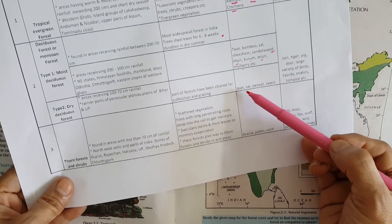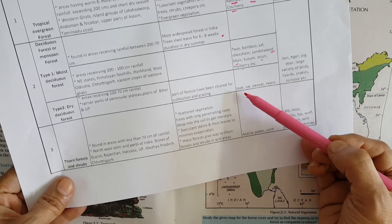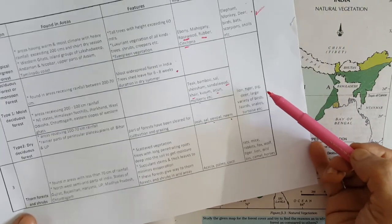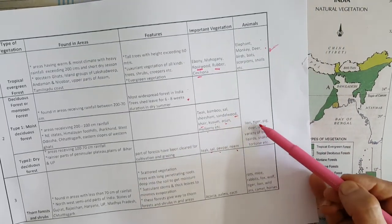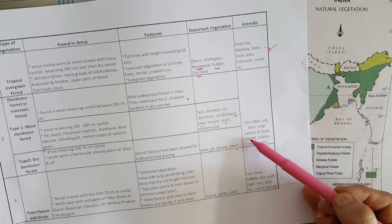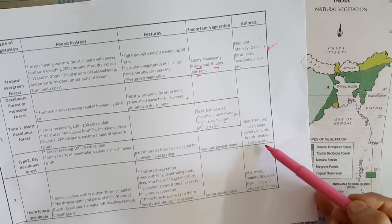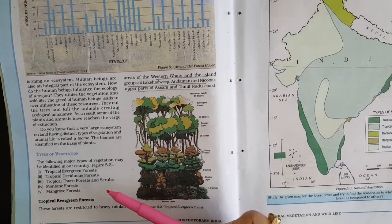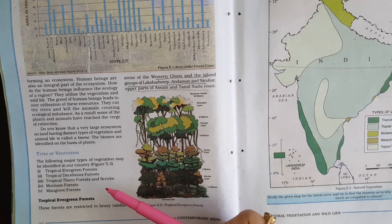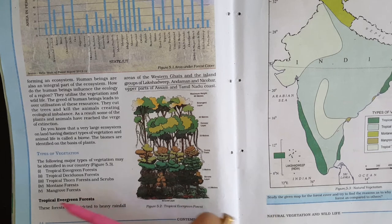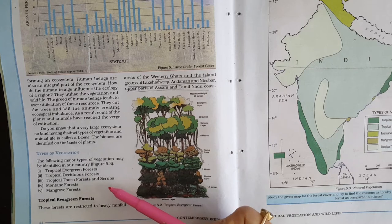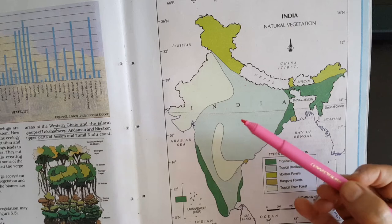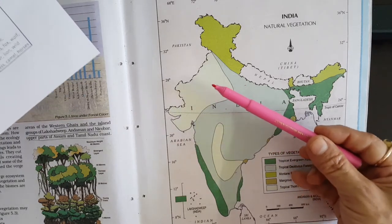Important vegetation of dry deciduous forests includes Teak, Sal, Peepal and Neem. Important animals in the monsoon forest are lion, tiger, pig, deer, various varieties of birds, lizards, snakes, and tortoise. The third type of tropical forest corresponding to further reduced rainfall is known as tropical thorn forest or scrub, found in areas receiving less than 70 centimeters of annual rainfall.